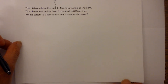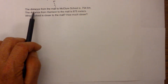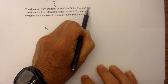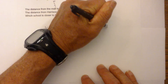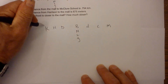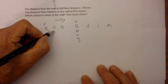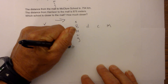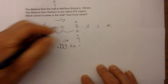For the next problem: the distance from the mall to McClure is 0.75 kilometers, and the distance from Harrison to the mall is 875 meters. We'll convert kilometers to meters using King Henry Died By Drinking Chocolate Milk. Starting at kilometer and going to meter is three steps in that direction — one, two, three.